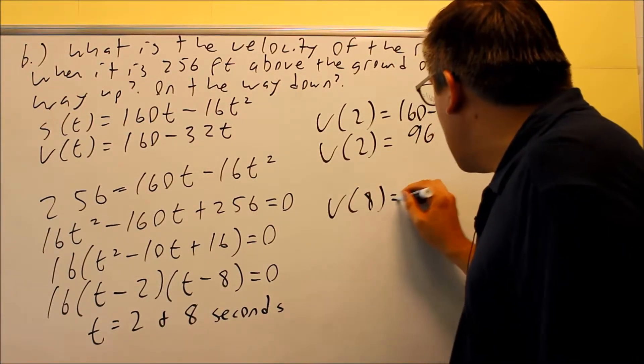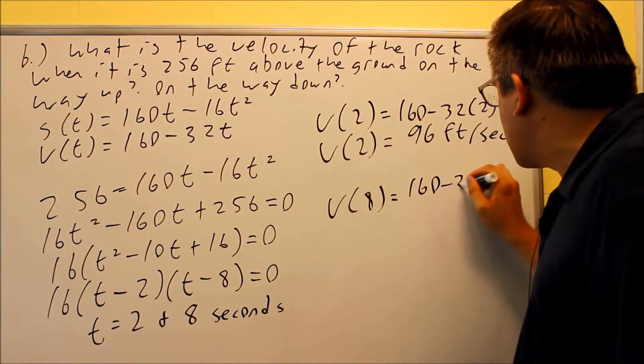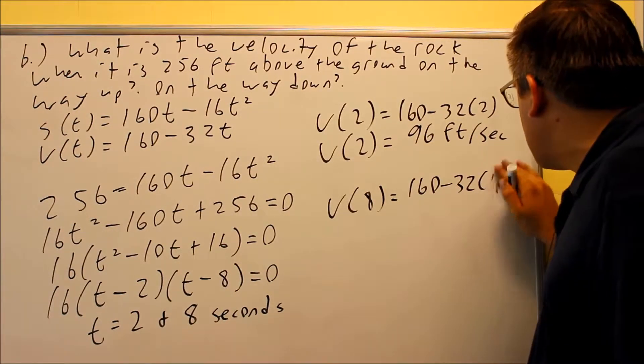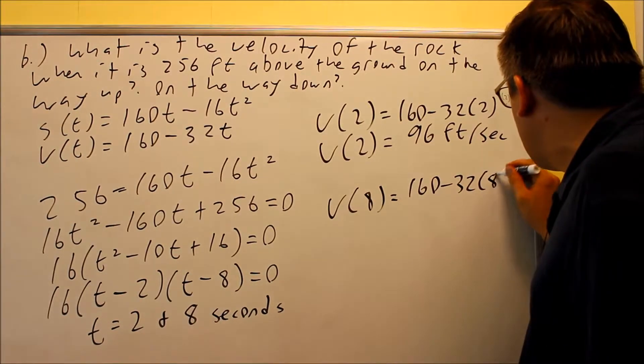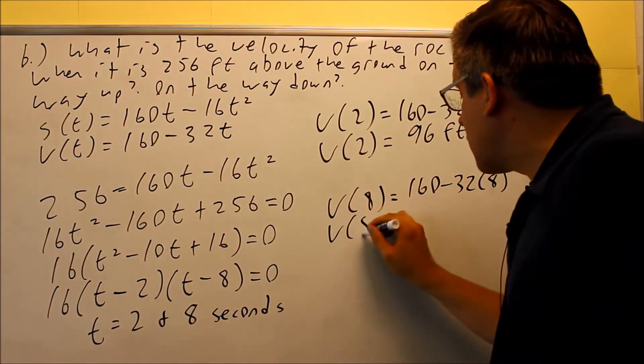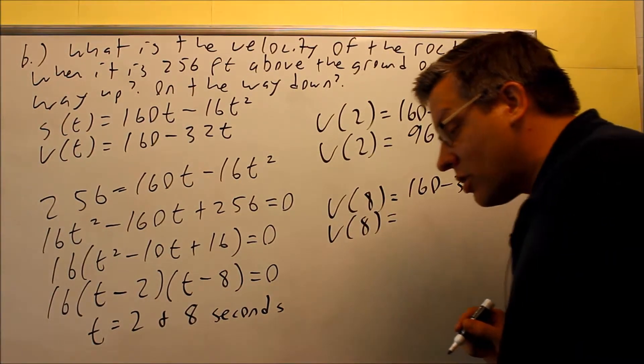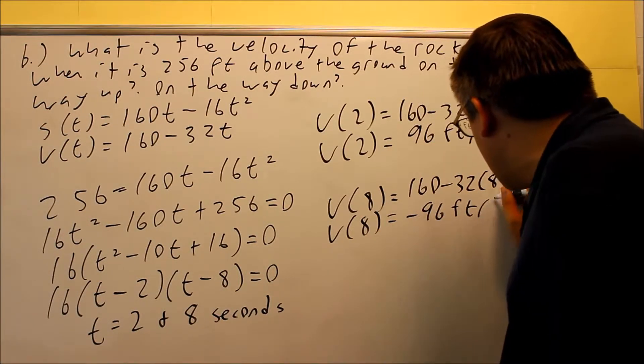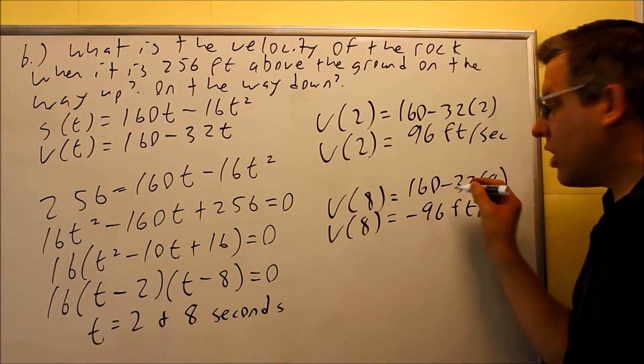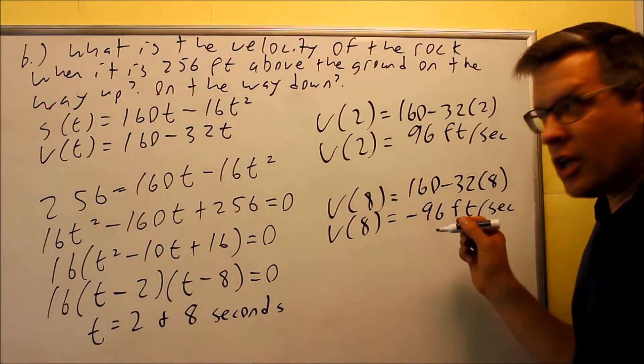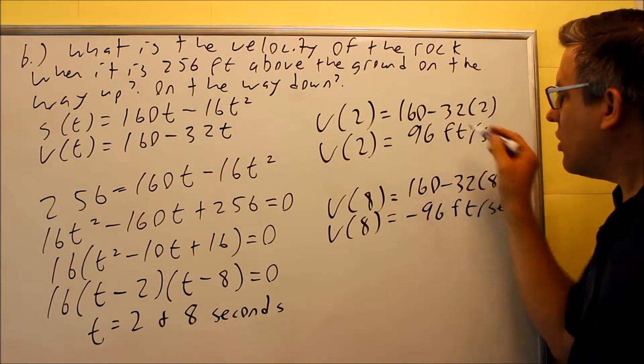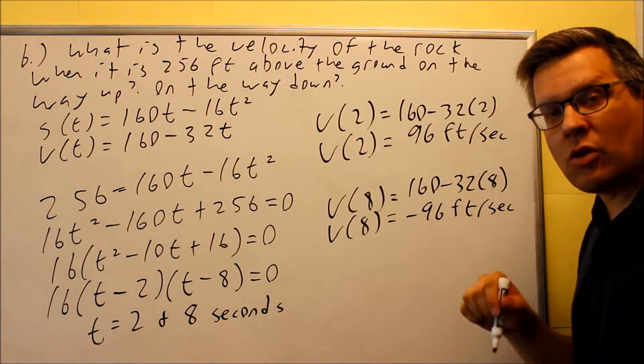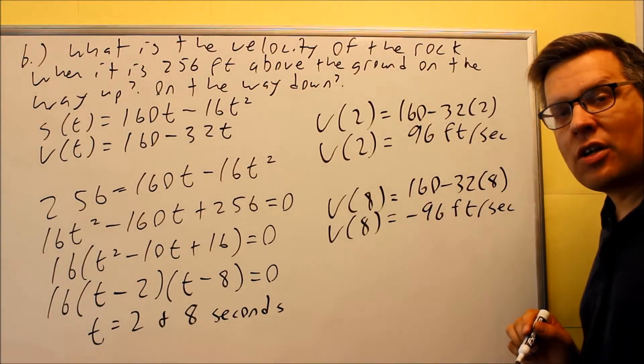Then I want to find the velocity at 8 seconds, 160 minus 32 times 8. And this gives us a negative result. That's going to give us negative 96 feet per second. So that must mean that's the velocity when it's moving down. So moving up is positive velocity, 96 feet per second. Velocity on the way down would be negative 96 feet per second.